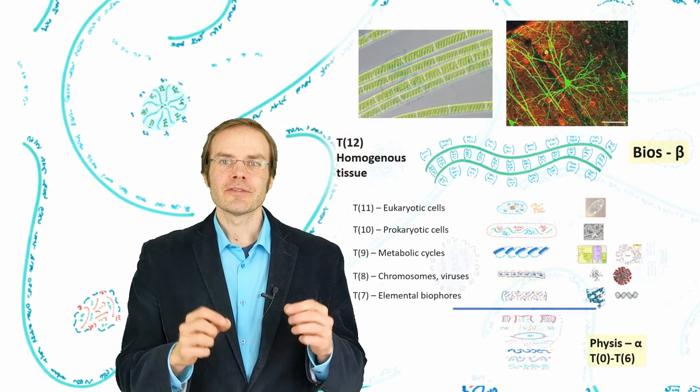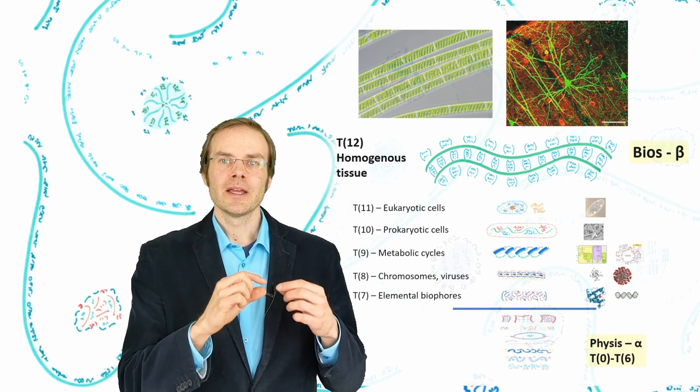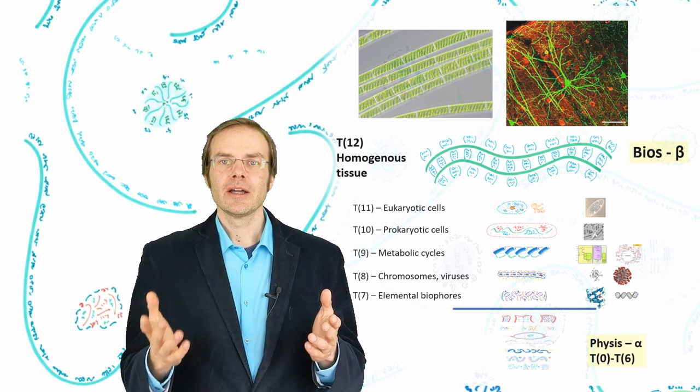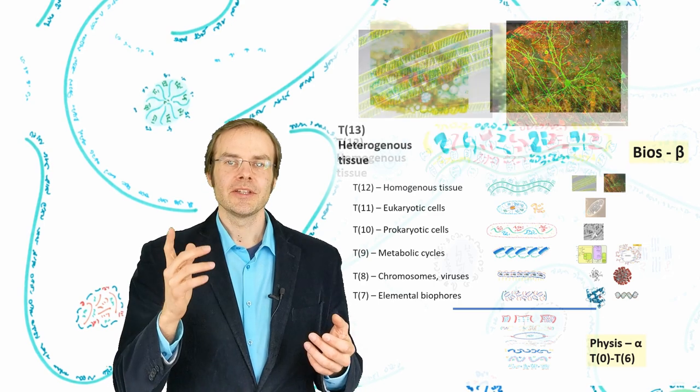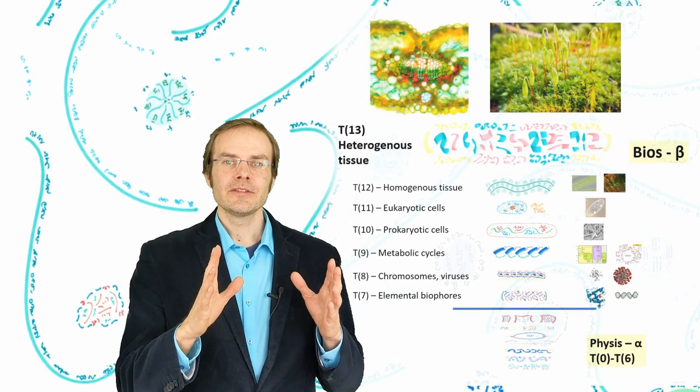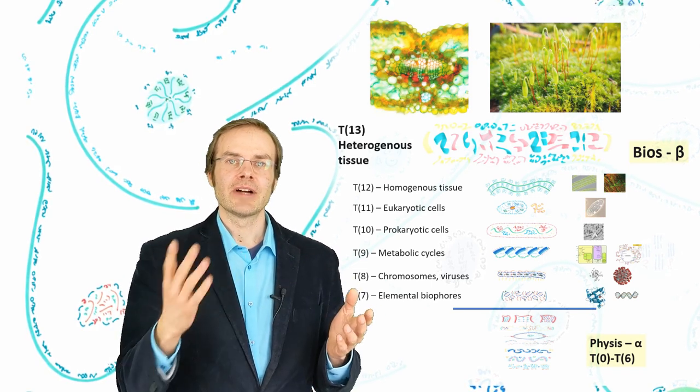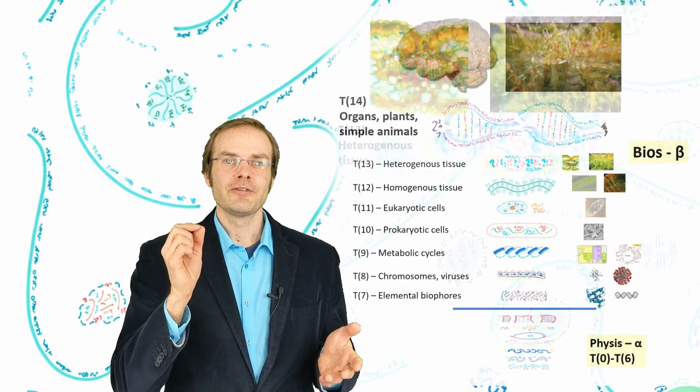Now we can leave the microscope and go to things that we can actually see with our own eyes. In totality 12, cells of the same type go into symbiosis and form homogenic tissues. Those would be primitive fungi or social associations of algae. In totality 13, different types of tissue form heterogenic tissues. And here we get higher fungi and plant life.